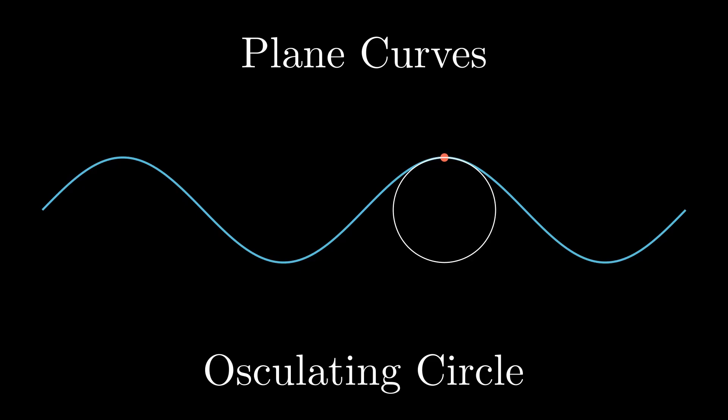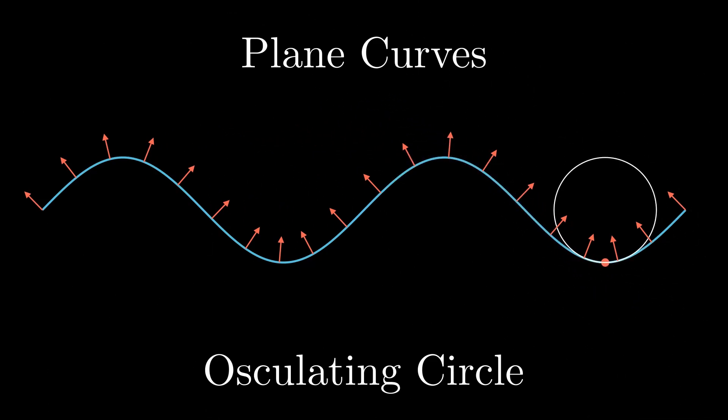But if we give the curve an orientation by placing normal vectors at each point, we can define the sign of the curvature. For example, at this point the curvature is negative, and here the curvature is positive. We will discuss how to formalize these ideas later.